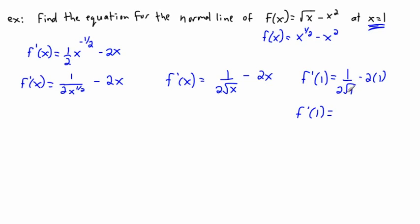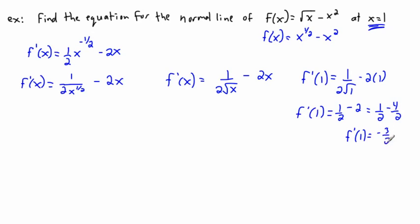Evaluating at x = 1: f′(1) = 1 over (2 times √1) minus 2 times 1 = 1/2 minus 2. Converting to common denominators, that's 1/2 minus 4/2 = −3/2. So the slope of the tangent at x = 1 is −3/2.